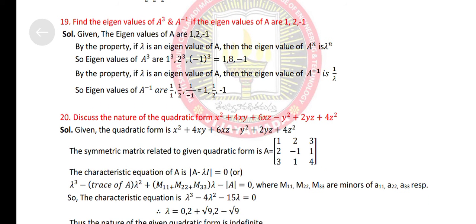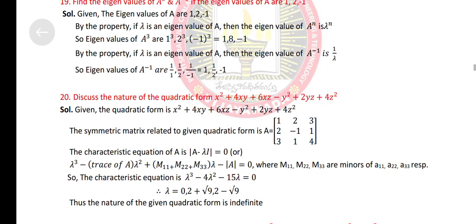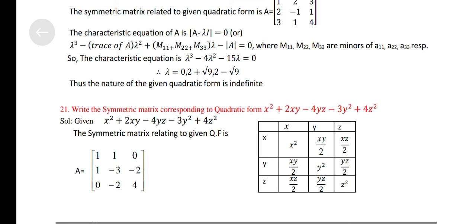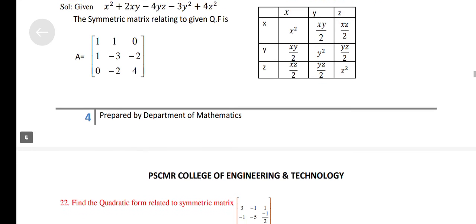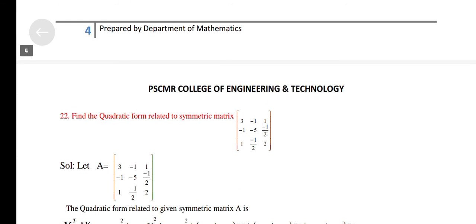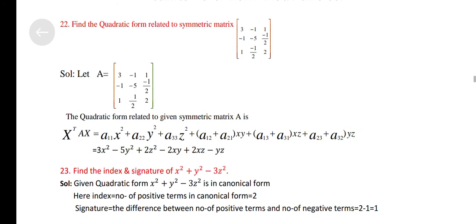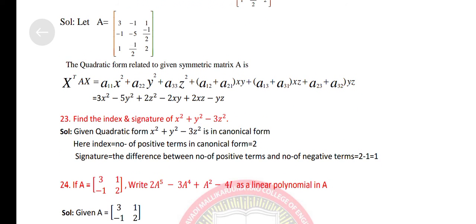Discuss the nature of quadratic form x square plus 4xy plus 6xz minus y square plus 2yz plus 4z square. Write the symmetric matrix corresponding to quadratic form x square plus 2xy minus 4yz minus 3y square plus 4z square. Find the quadratic form related to symmetric matrix. Find the index and signature of x square plus y square minus 3z square.